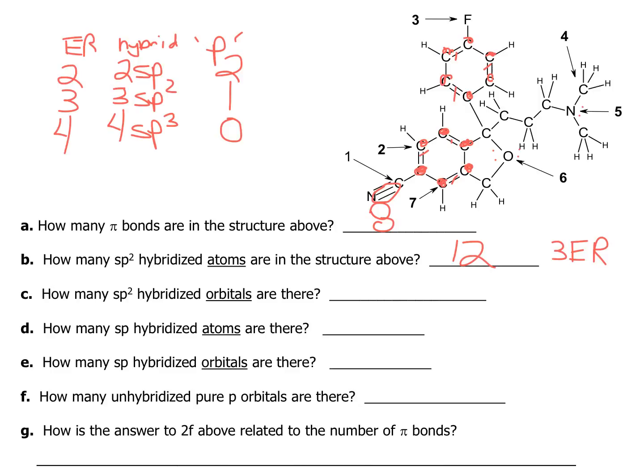So if I look here for sp2, it looks like every time I have an sp2 atom, I am going to have three sp2 orbitals. So that's simply multiplying this answer by three. I have 36. How many sp hybridized atoms are there? Well, let's look for things with two electron regions. So if I look, I believe this nitrogen, which has a lone pair on it, must be one of those sp centers, and this carbon must be another, and I can't spot anything else. So I believe I have two sp hybridized atoms in this molecule.